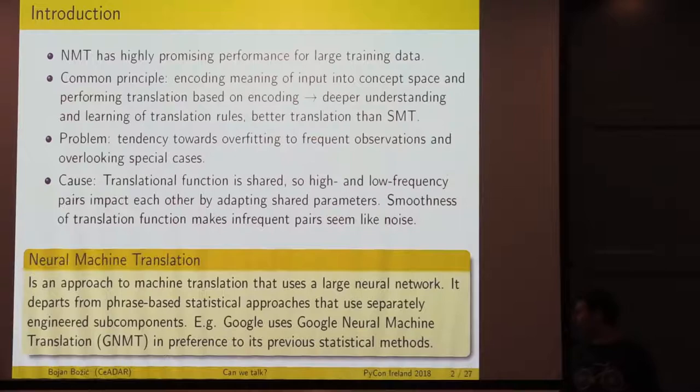Google has switched from the statistic model to neural machine translation. They call it GNMT and say they prefer it to the results they had with statistical methods. It's very promising in terms of performance for large corpora. If we have a lot of training data, it's probably a good idea to try the neural approach.